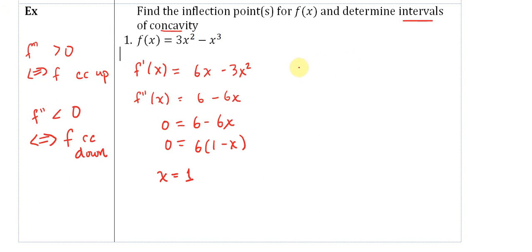Making the sign chart for this, and we have to be clear, this is the sign chart of f double prime. If we pick a number smaller than 1, say 0, we have a positive number. If we pick a number bigger than 1, say 50, 6 minus 6 times 50 would be negative.